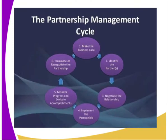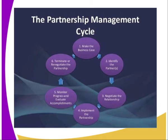When we talk about the partnership management cycle, this is how it looks: Number one, make the business case. Number two, identify the partners. Number three, negotiate the relationship. Number four, implement the partnership. Number five, monitor progress and evaluate accomplishment. Number six, terminate or renegotiate the partnership. That is the management cycle.